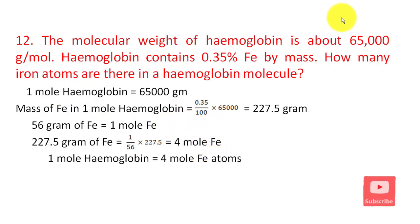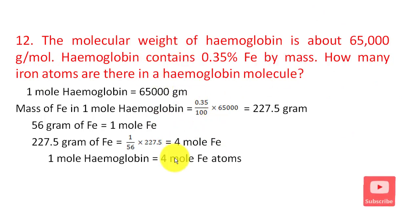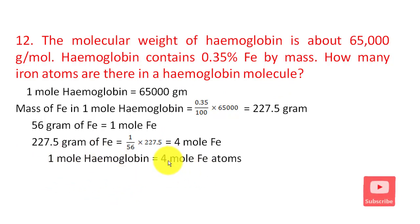So how many iron atoms are in 1 molecule of hemoglobin? 1 mole of hemoglobin contains Avogadro's number of molecules, and 4 moles of iron means 4 times Avogadro's number of iron atoms per mole. Therefore, there are 4 iron atoms in 1 molecule of hemoglobin.